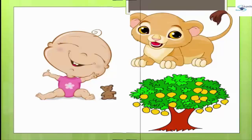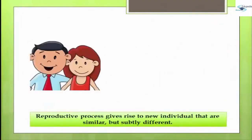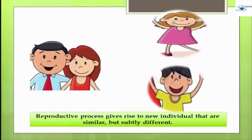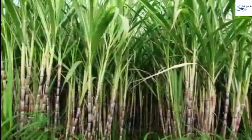Why didn't they expect a lion or a mango tree? Ever since humans started thinking about life, they were always puzzled — how seeds of a mango tree give rise to a mango tree. How each organism is unique yet reproduces a similar organism. Reproductive processes give rise to new individuals that are similar but subtly different.